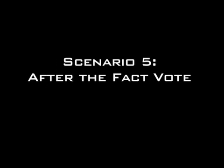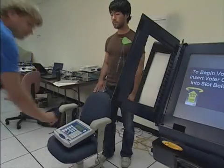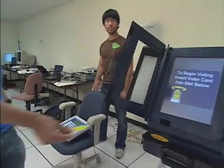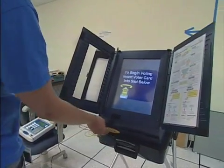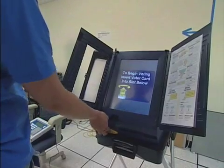The fifth scenario is an after-the-fact vote. This is similar to the previous scenario. The voter gets his smart card and inserts it in the edge.